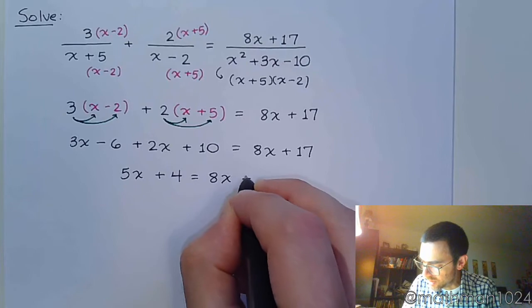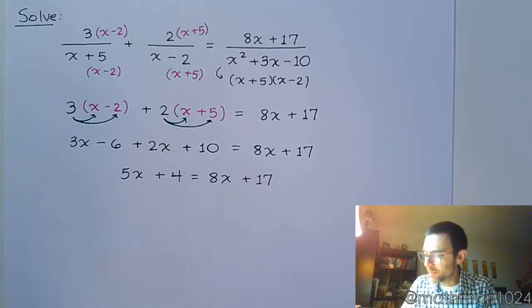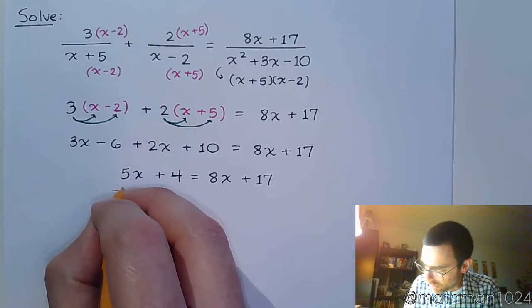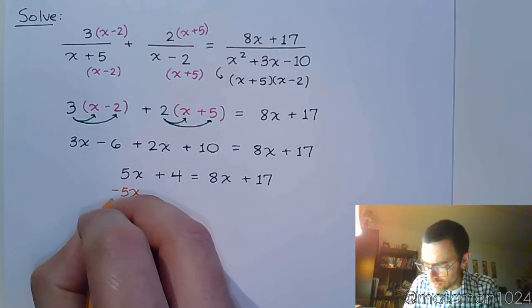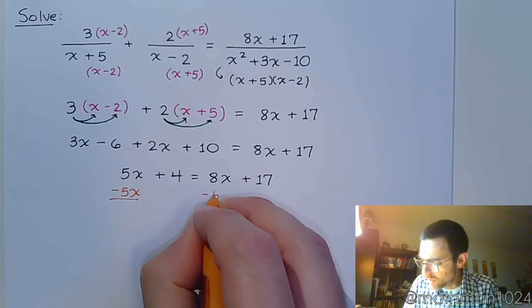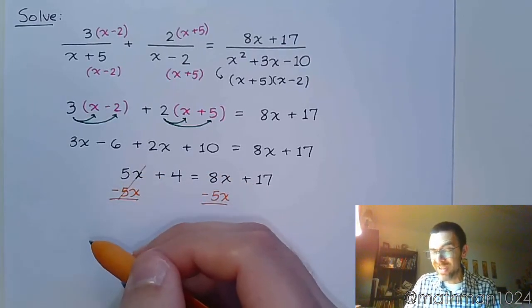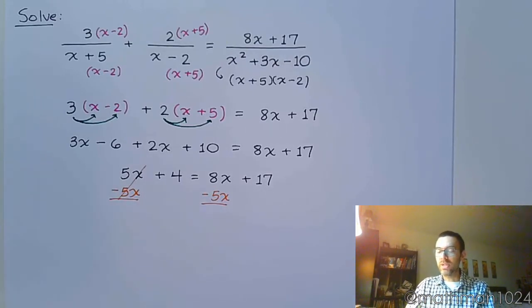And again, the 8x plus 17 is just waiting to do something, right? All right, so this is linear. We're going to start moving terms around. I'm going to go ahead and subtract 5x on both sides so that I can have a positive coefficient for my variable term. You don't have to do it that way. In fact, you are more than welcome to move the 8x to the other side. I don't like to do that because that is going to guarantee that I have a negative. And if I can avoid a negative, I'm going to.